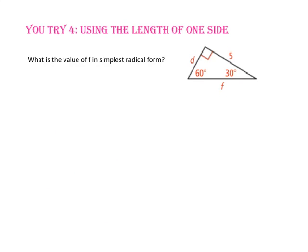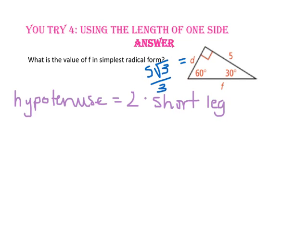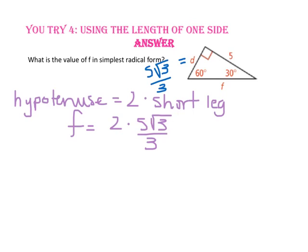Pause the video and do you-try number 4. What is the value of f in simplest radical form? Since d equals 5 times the square root of 3 over 3, and in a 30-60-90 triangle the hypotenuse is twice the length of the short leg, f equals 2 times 5 times the square root of 3 over 3. Simplifying, since 2 times 5 is 10, f equals 10 times the square root of 3 over 3.